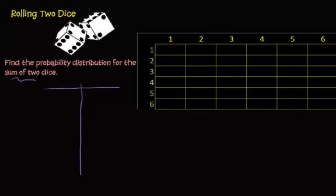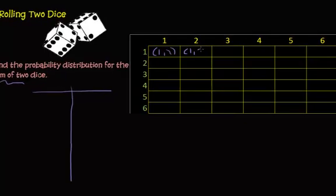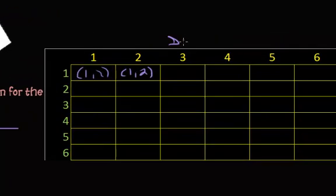So in this one, it's going to be 1,1, and then this one would be 1,2. We'll call this die 2, and this one over here will be die 1.